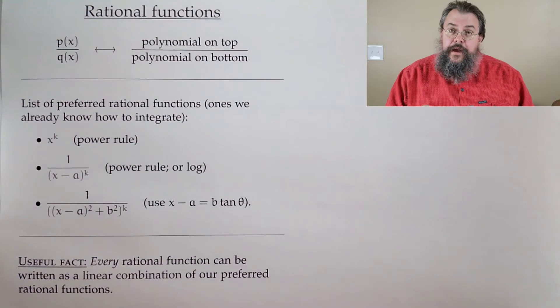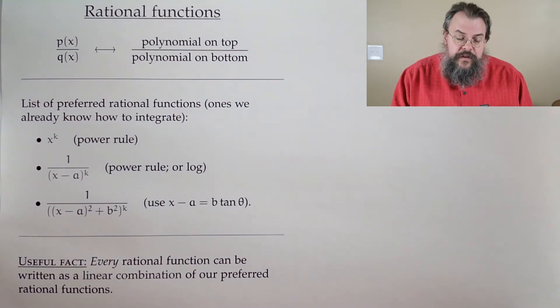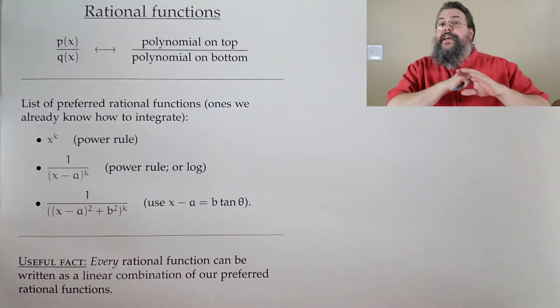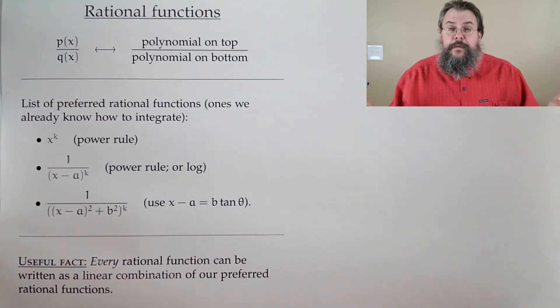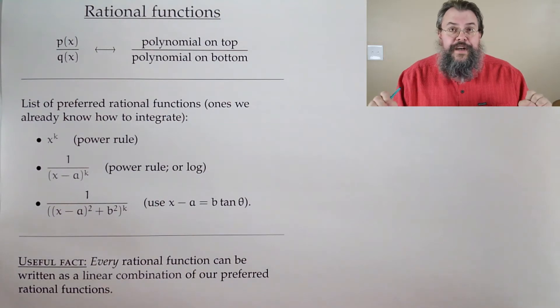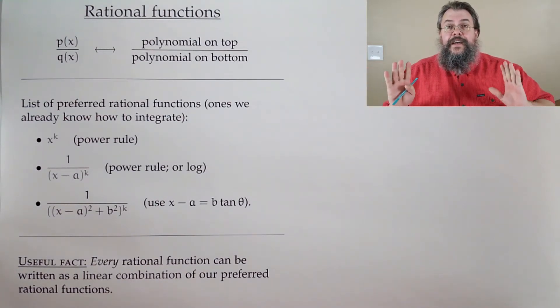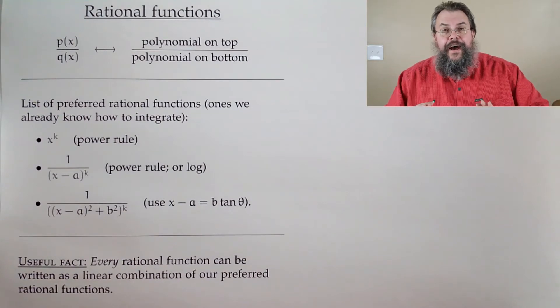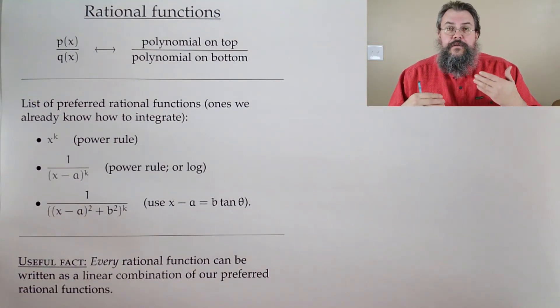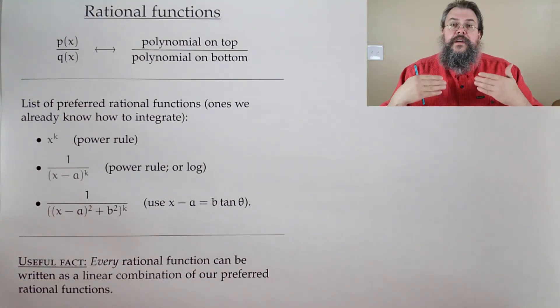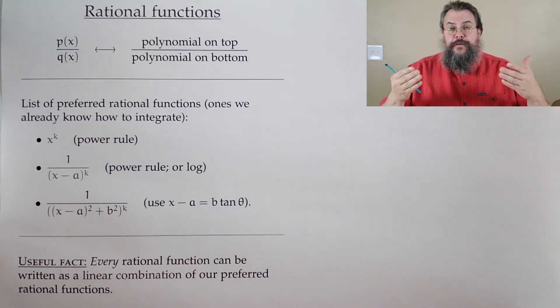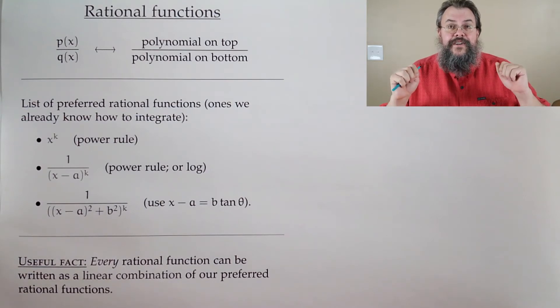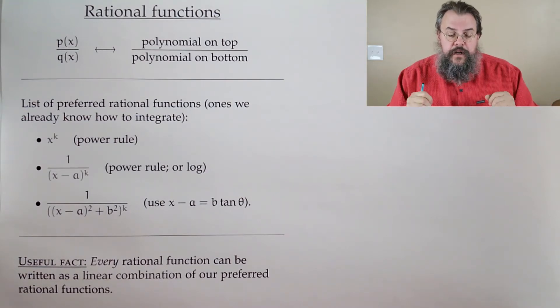As a reminder, I want to emphasize this. A rational function means it's a polynomial over a polynomial. If you do not have a polynomial over a polynomial, partial fractions can't be done. It doesn't mean it can't be done eventually, it just means it can't be done right now. You have to make a substitution perhaps, so that it becomes a polynomial over a polynomial. You cannot start partial fractions until polynomial over a polynomial.